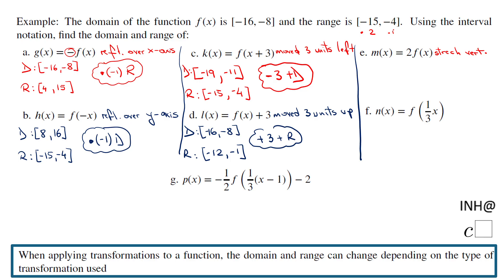The domain stays the same on a vertical stretch — negative 16 to negative 8. But the range is the one that changes: negative 15 times 2 = negative 30, and negative 4 times 2 = negative 8. So the rule: range times 2. This is very similar to part A — the reflection was multiplying by negative 1, same idea.